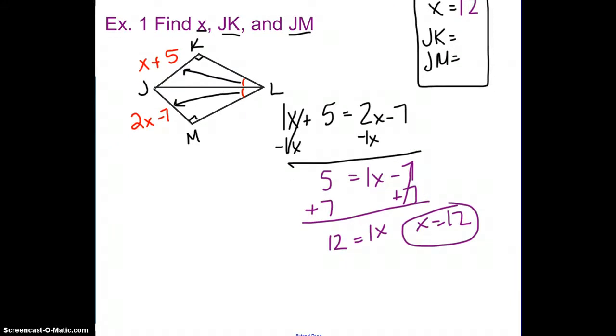Now my job is to find JK and JM. So if I look at these two, actually JK appears to be easier to find. JK is X plus 5, and I know that X is equal to 12. So 12 plus 5 is going to equal 17. So in this one, JK is 17.